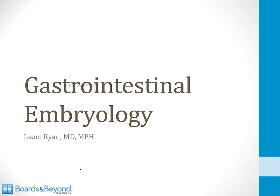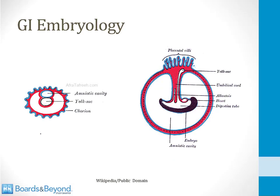Welcome to our module on gastrointestinal embryology. Just a few weeks after fertilization, the embryo has two cavities: the yolk sac and the amniotic cavity. Where they meet is called the embryonic disc, and this is where all the action is — all the organs and structures we know are going to come from here.